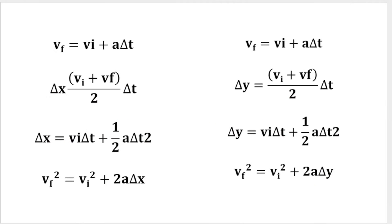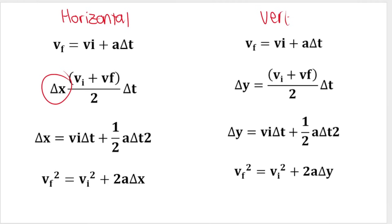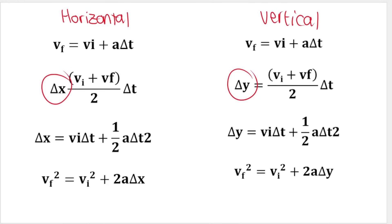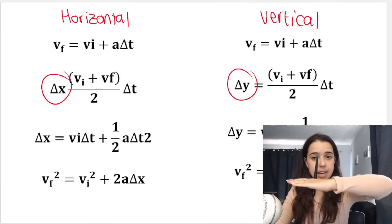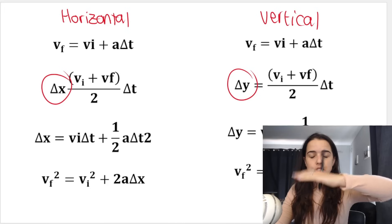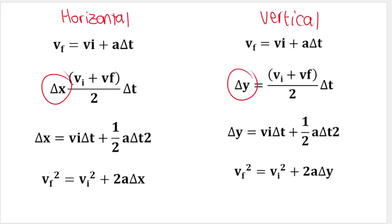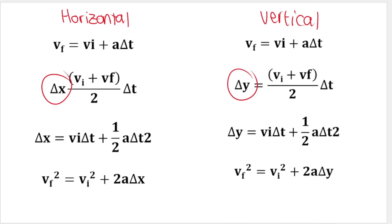Here's a side-by-side contrast of those formulas. The one for horizontal motion uses delta X — we know that because of the delta X. The one for vertical motion uses delta Y. It's easy to remember: X is the X-axis for horizontal motion, Y is the Y-axis for vertical motion.